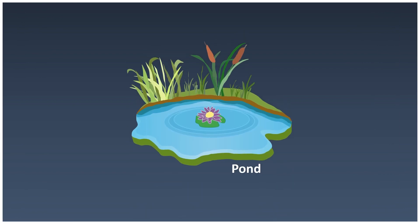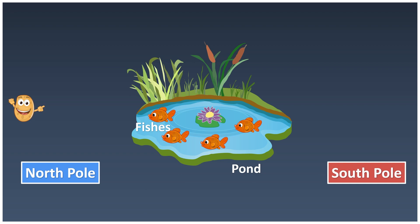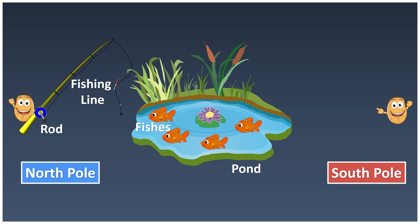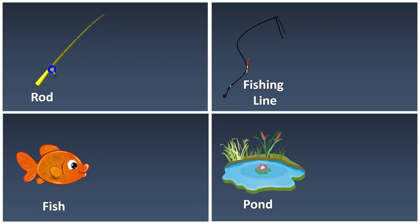Let's use a story analogy. We have a pond with four fishes inside. On our left is the north pole of the earth, where we have a man sweating there to fish. On our right is the south pole, where we have another man waiting for fishing. Since we mentioned about fishing, they will need a fishing rod attached together with a fishing line. These five things are very important in mitosis and meiosis.